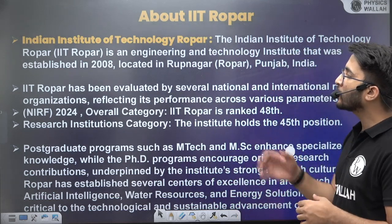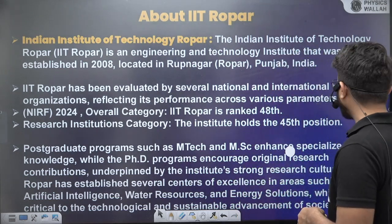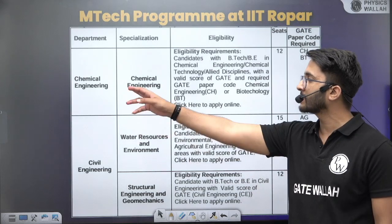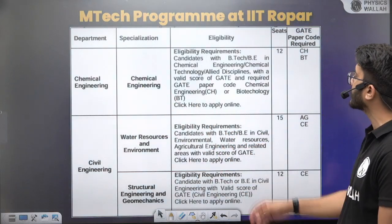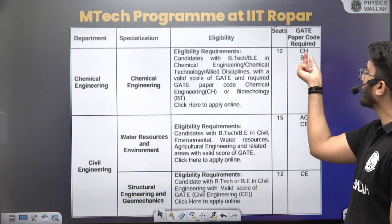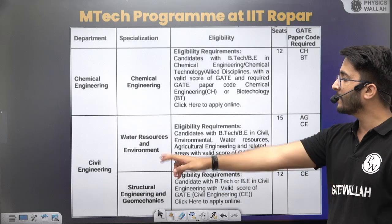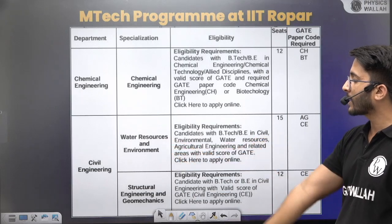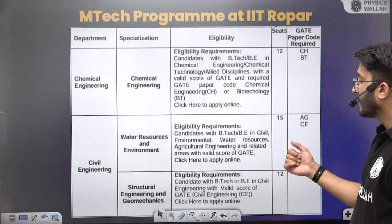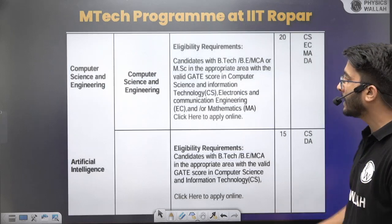IIT Ropar was established in 2008 and is offering multiple courses. The Chemical Engineering department offers Chemical Engineering with 12 seats — GATE papers CH and BT are eligible. For Civil Engineering, Water Resources, Environmental Engineering, Structural Engineering, and Geo-Mechanics have 15, 15, and 12 seats available respectively.